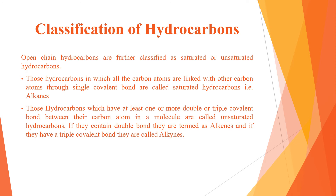Those hydrocarbons which have at least one or more double or triple covalent bonds between their carbon atoms in a molecule are called unsaturated hydrocarbons. If they contain a double bond they are termed alkenes, and if they have a triple covalent bond they are called alkynes.